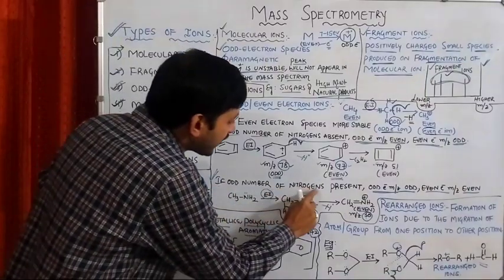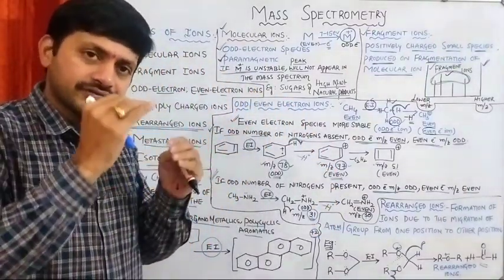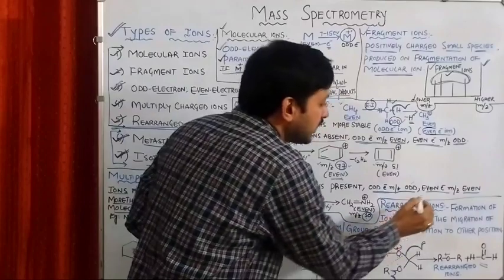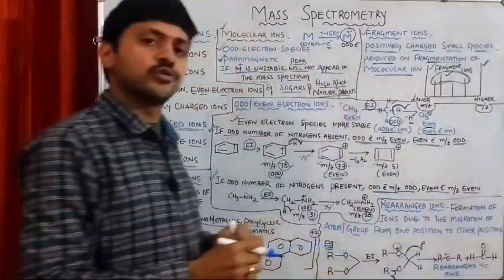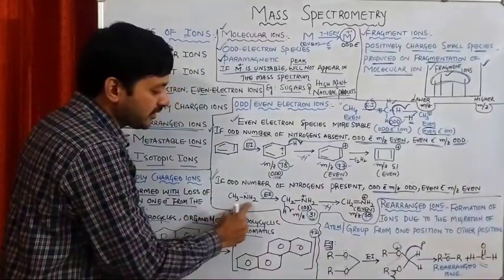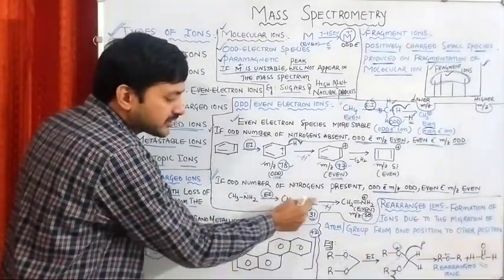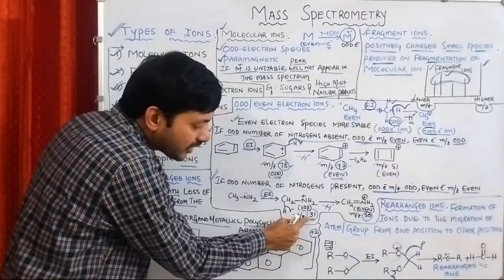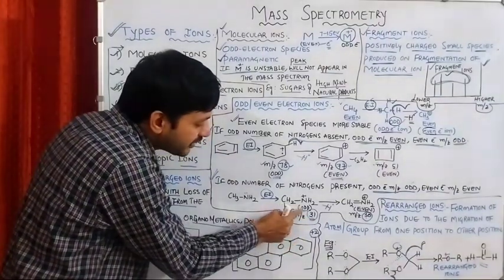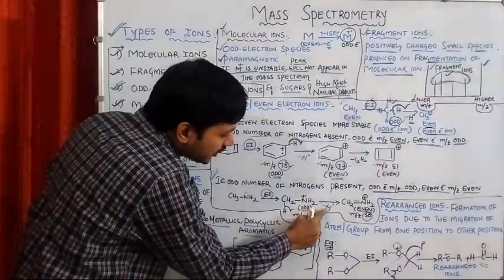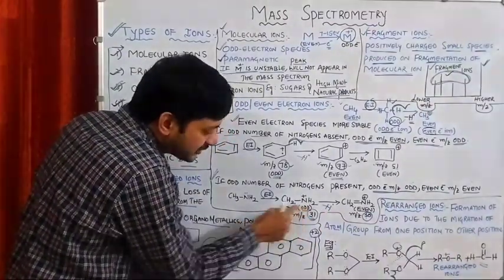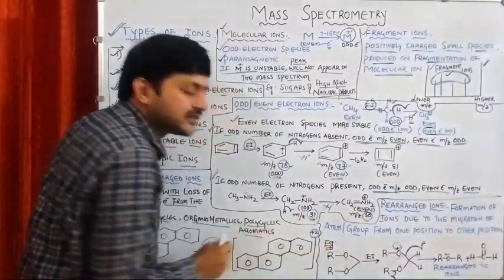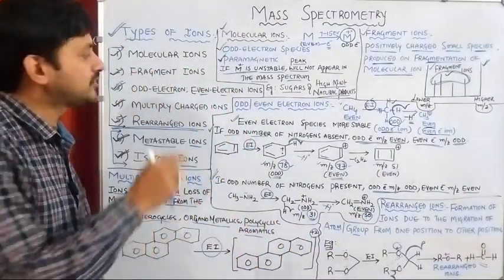If an odd number of nitrogen is present in the molecule — for example, one nitrogen — then odd electron m/z is odd, and even electron m/z is even. This is the nitrogen rule applied in mass spectrometry.